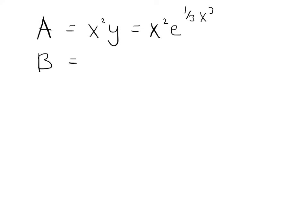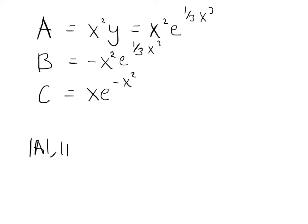B is just equal to minus A, so we have minus x squared e to the one third x cubed. And C, we already know, which is x e to the minus x squared. We now need to determine which of the terms dominate. Each of the three terms has an exponential that will dominate. In A and B we have e to the one third x cubed, which grows very quickly as x gets bigger. But in C we have a negative exponent, so that goes to zero. So A and B are clearly the dominating terms — the absolute values of A and B are both greater than the absolute value of C at large x. This means we have a consistent case.